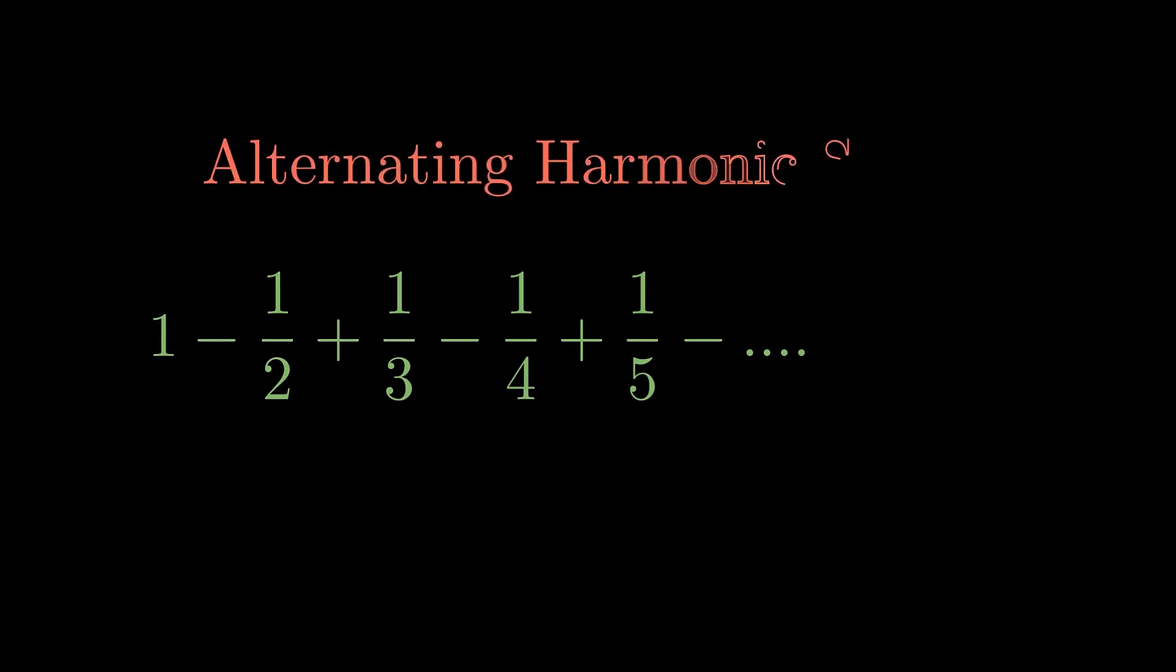The series you see is called the alternating harmonic series and mathematicians have figured out that the series converges to some perfect value, natural log of 2.